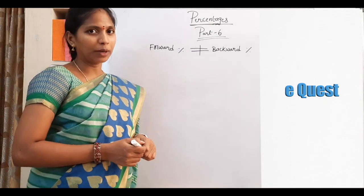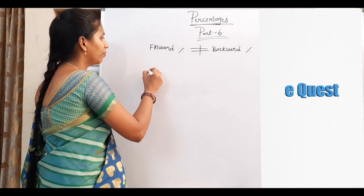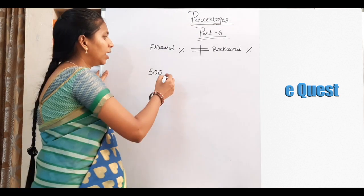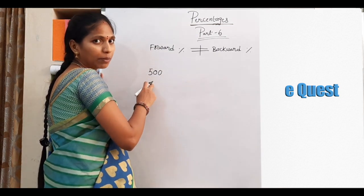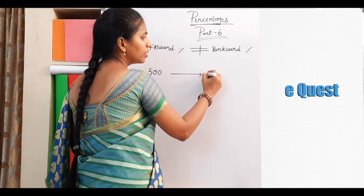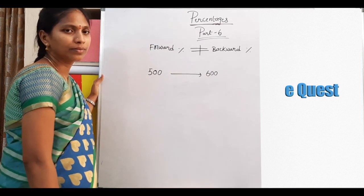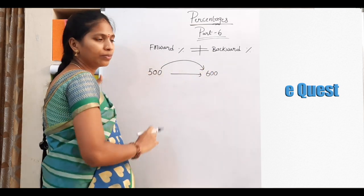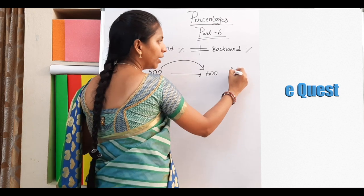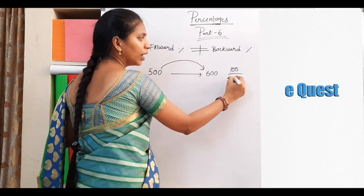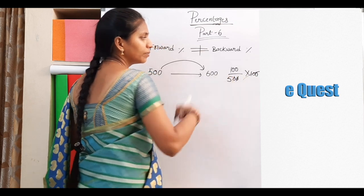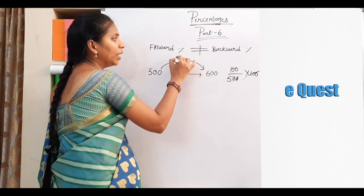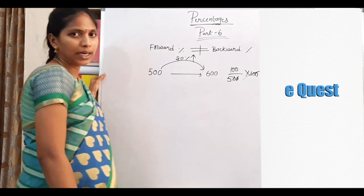Suppose your pocket money is 500 rupees. You got good marks, so your father increased your pocket money by 100 rupees. The new pocket money is 600. What is the percentage increase? Increase is 100 by initial value 500 into 100: that is 1 by 5 into 100, which equals 20% increase.